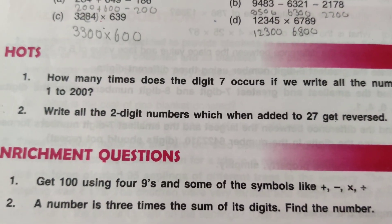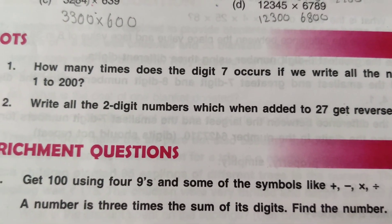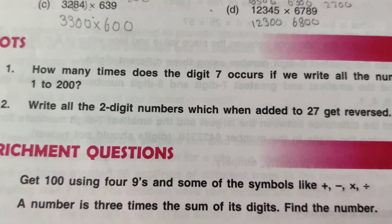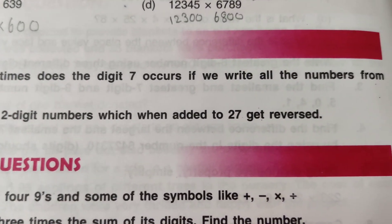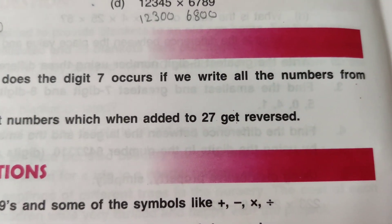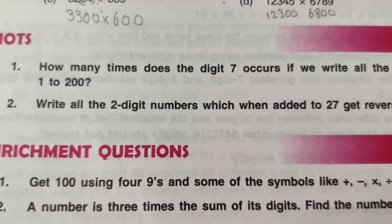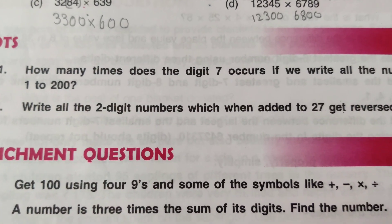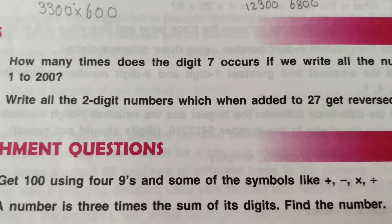First question of chapter 1, natural numbers and whole numbers. Question number one: how many times does the digit 7 occur if we write all the numbers from 1 to 200?